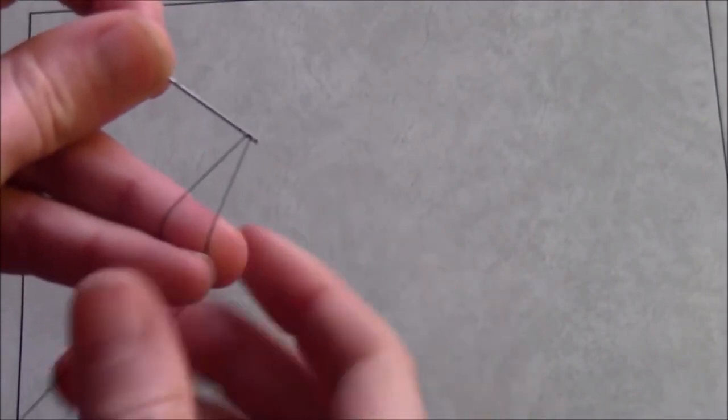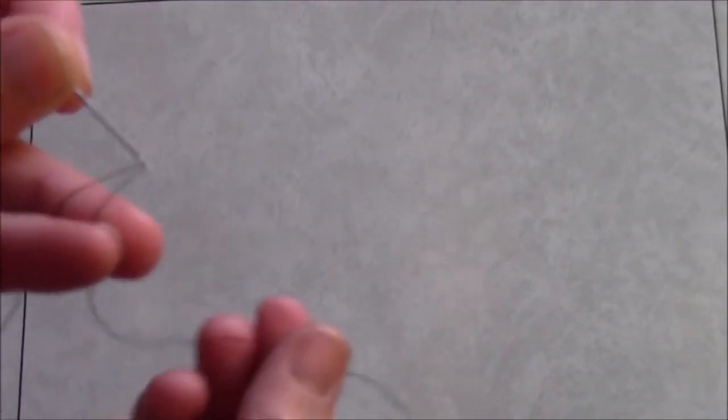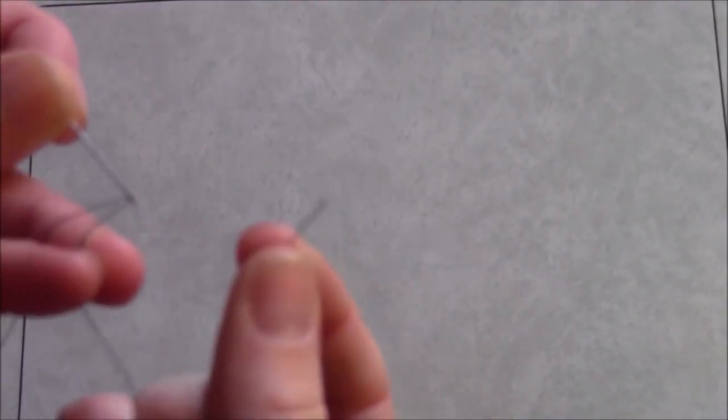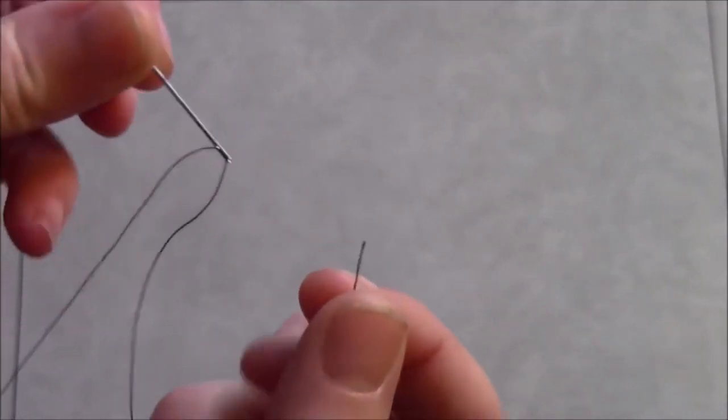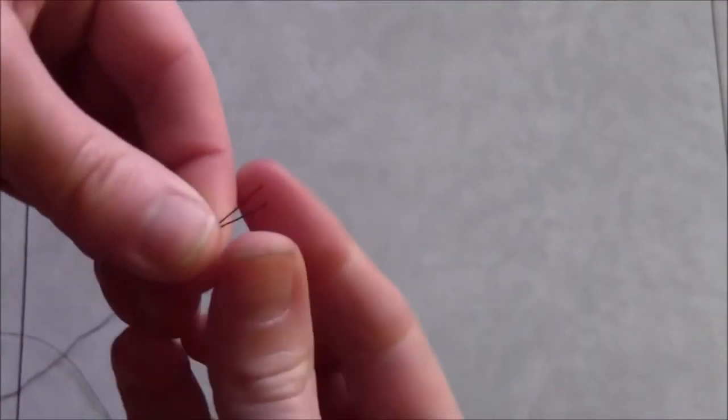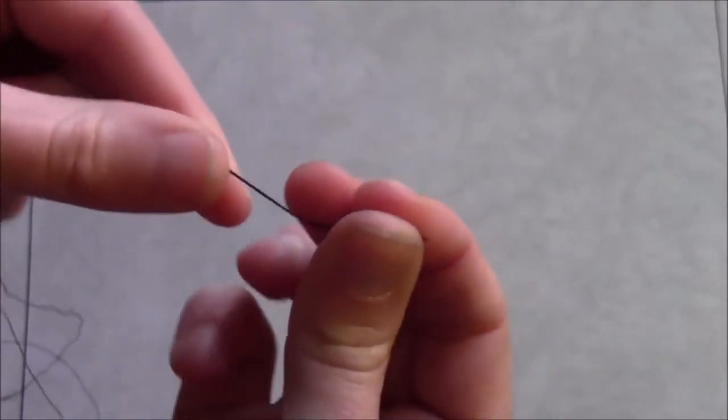From the opposite direction, so that both of your thread tails are coming out of the same side of the needle. Then again, just like before, you pull the thread up until the ends are even with each other. And then you just tie the two ends into a knot.